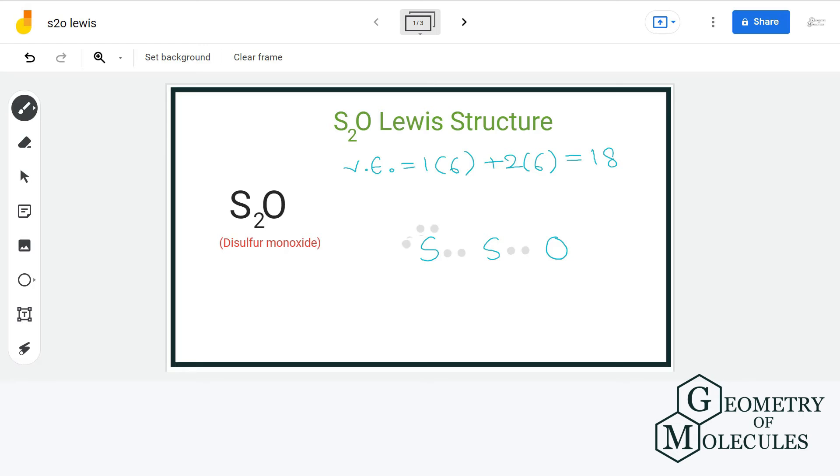But if we assign six electrons to oxygen and sulfur, the terminal one, then the sulfur here in the middle won't be completing its octet.